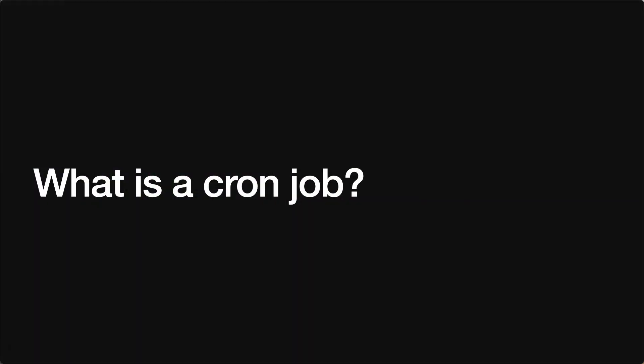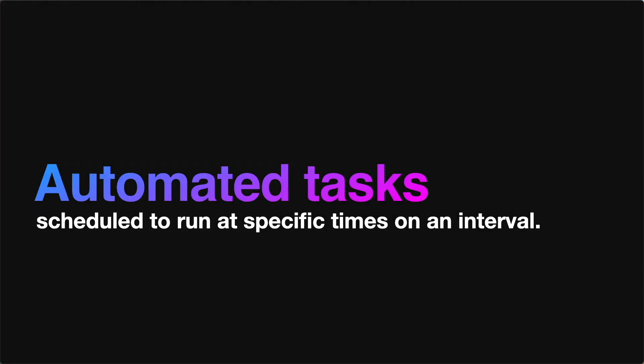We're going to use Node-Cron to execute cron jobs, but it makes sense to start with the basic question: what is a cron job? Well, in a nutshell, a cron job is a way of automating tasks — specifically tasks that are scheduled to run on an interval at specific times. Using the cron syntax, you can specify the exact date and time that you want a specific task to run, whether it is supposed to happen every day, every week, every month, and so on.